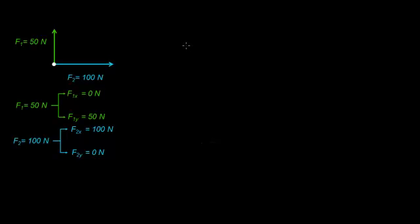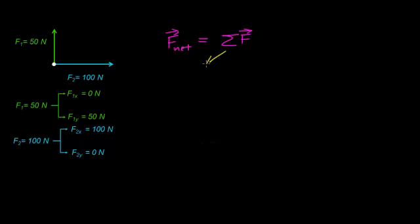Let's get into the mathematical analysis. We're looking for the net force acting on this object, which people often write as F with a subscript 'net,' with a little arrow over the F to indicate it's a vector. I prefer to write the net force as the sum of all forces acting on the object, just to keep in mind that we have to add up all forces and take into account their directions.